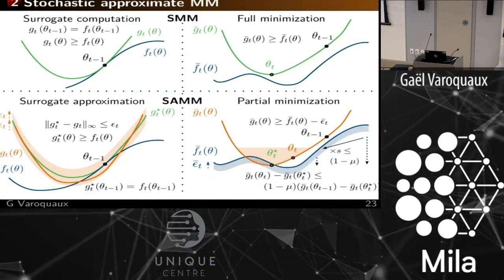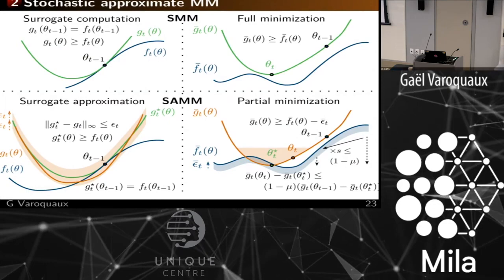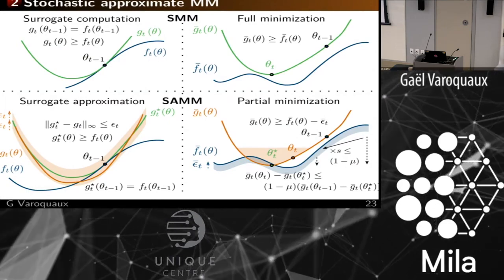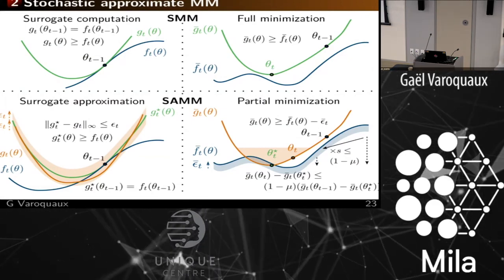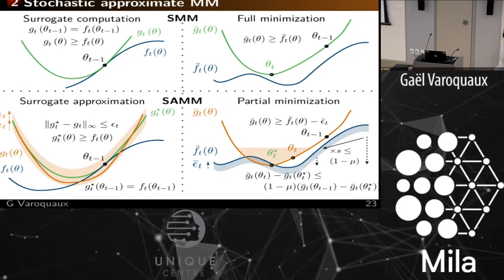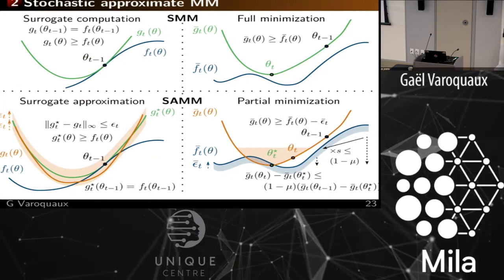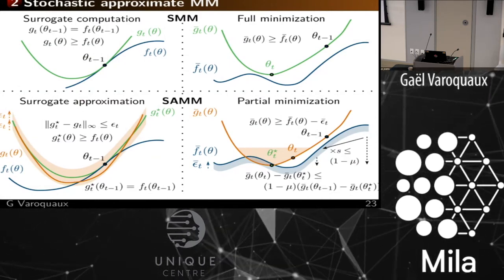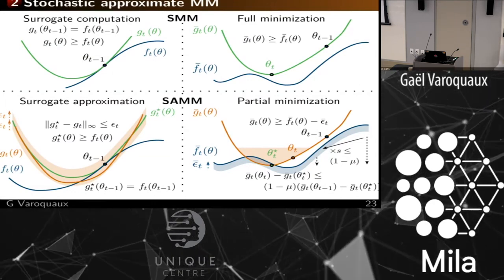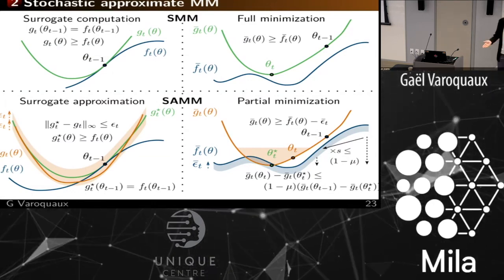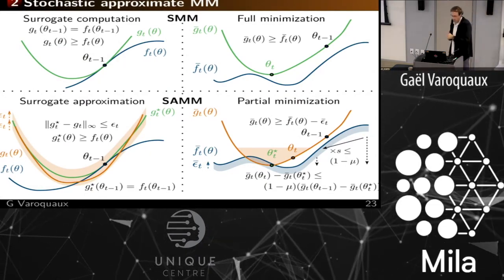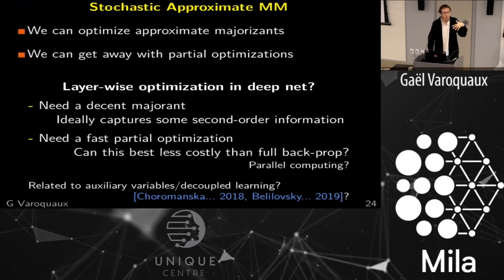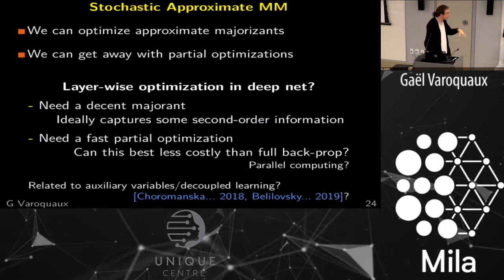To summarize: in stochastic MM we grab a data point, compute a surrogate cost, and optimize the surrogate. In stochastic approximate MM, the surrogate cost is approximate but gets closer and closer to the actual one, and the minimization is partial but the error decreases. If we have this, we converge. That's basically all there is to it — it gets pretty brutal in terms of the math.